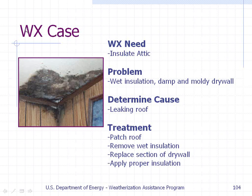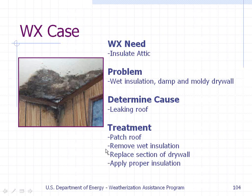Here's an example of a weatherization case. There's mold in the ceiling, and the need is to insulate the attic. The problem is wet insulation and damp, moldy drywall. The cause determined was a leaking roof. The treatment is to patch the roof, remove the wet insulation, replace the section of drywall that's been damaged and has mold on it, and apply proper insulation.